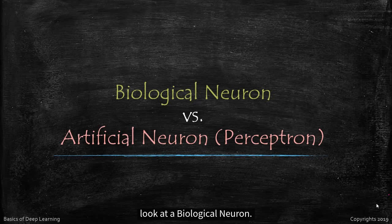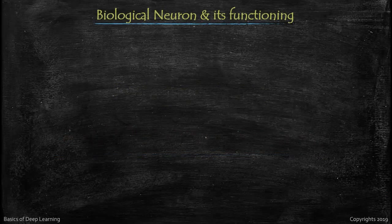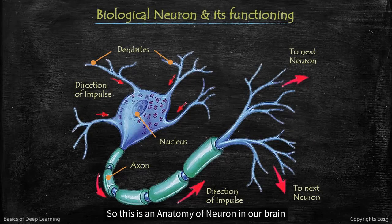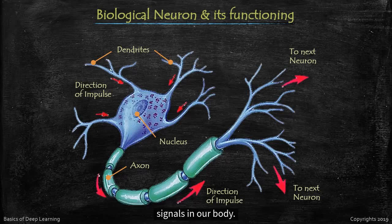Let's have a closer look at a biological neuron. This is an anatomy of neuron in our brain. Neurons are specialized cells that receive and transmit electrical signals in our body.